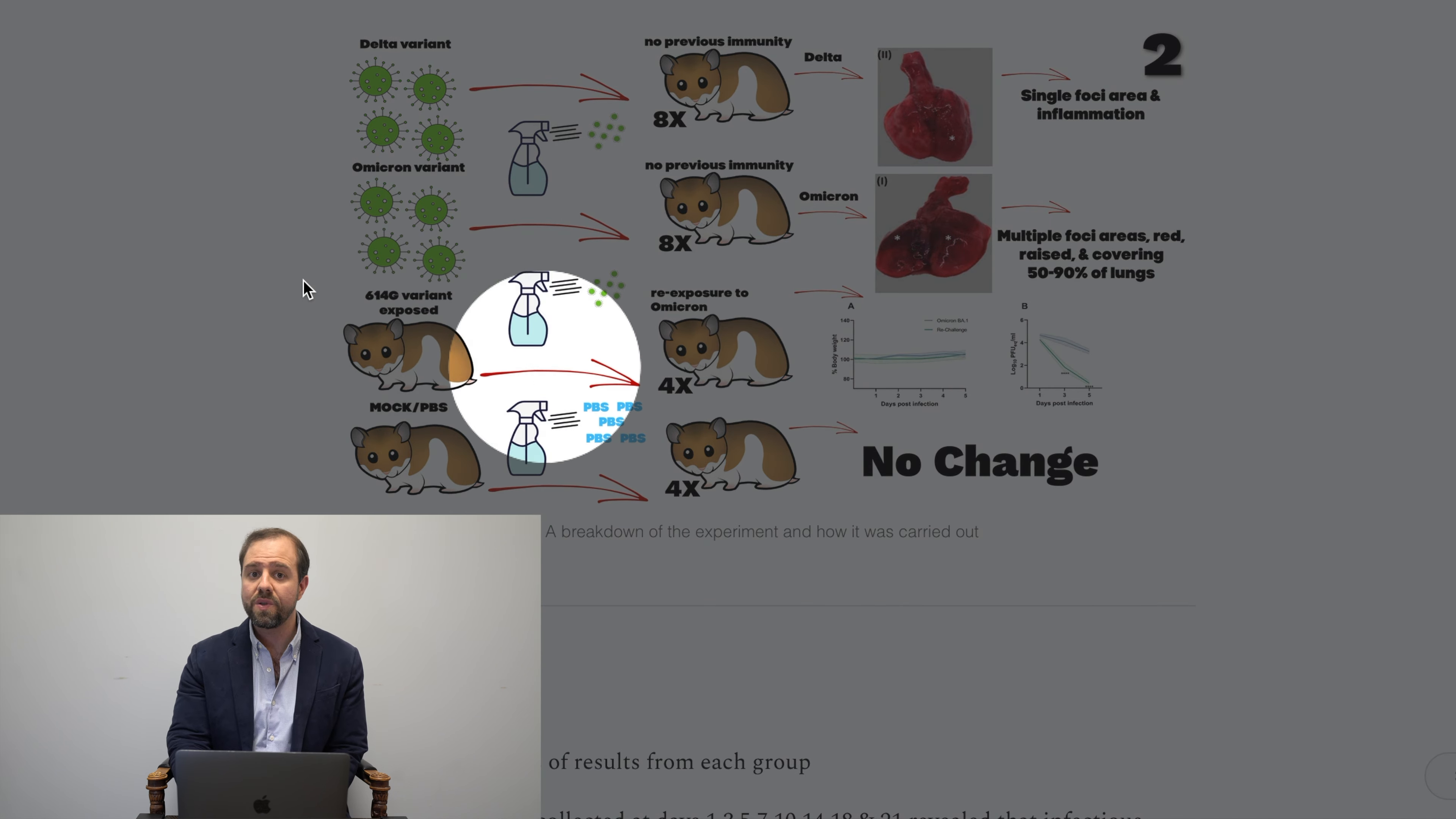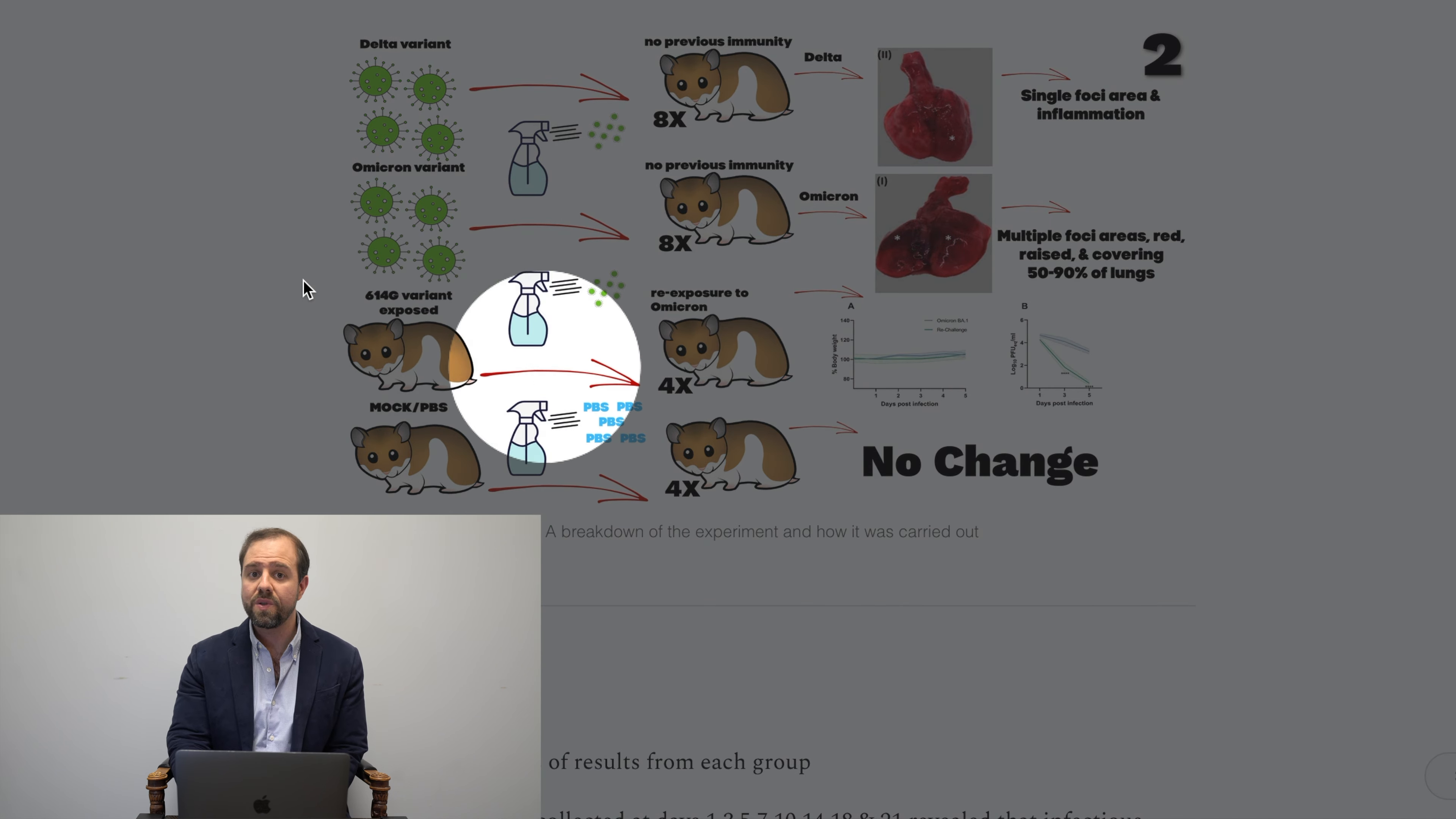Now, group three, those were hamsters previously infected with SARS-CoV-2, BivPAT-1, then reinfected with Omicron. There were four hamsters total in that group. And group four, a control group infected with nothing. They were essentially sprayed with PBS or phosphate buffered saline or placebo, if you will. Again, totaling four hamsters.